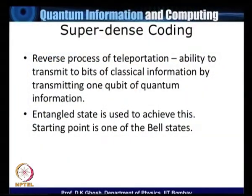Alice is to do this using a quantum state. Remember that in quantum teleportation she sent classical information through a classical channel and a quantum state was required. Now the purpose is to send one quantum bit to Bob and enable Bob to extract two bits of classical information — hence the name dense coding or super dense coding.